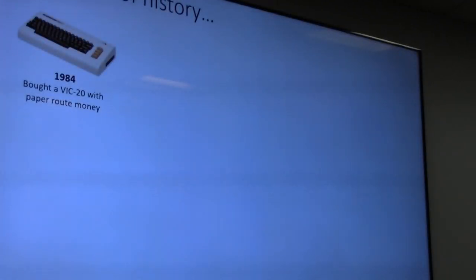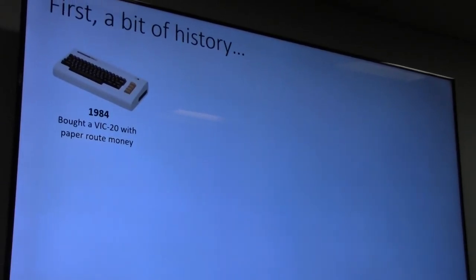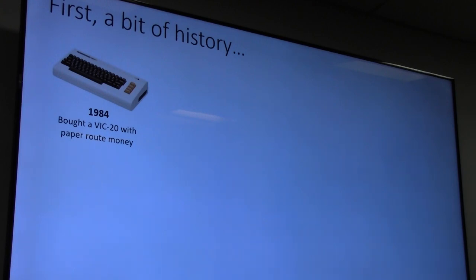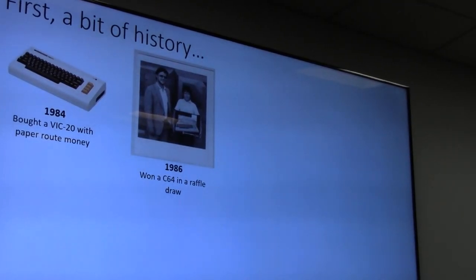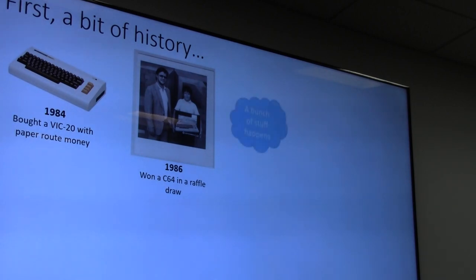A little bit of history about why I'm here. It starts with 1984 — I bought a VIC-20 with my paper route money. My parents said if I promised to spend 50% of my time programming and not just playing games, they would buy me a data set for it. That was my introduction to programming. Then the universe sent me another message: I won a Commodore 64 in a raffle draw. That photo is me — the other guy is the store manager. I knew I was really going to dig into computers and Commodores in particular.